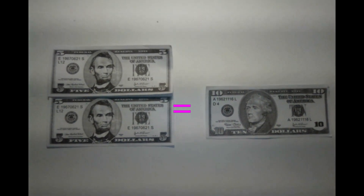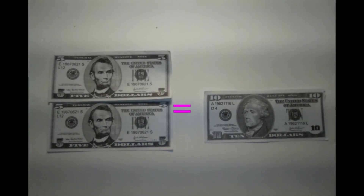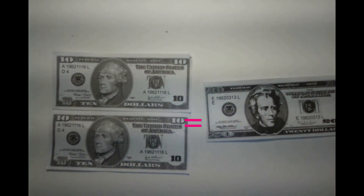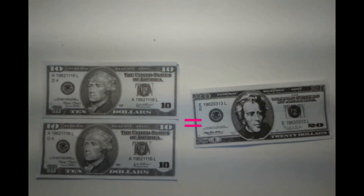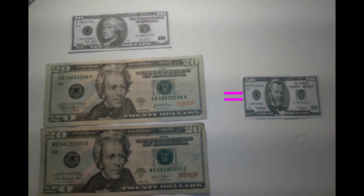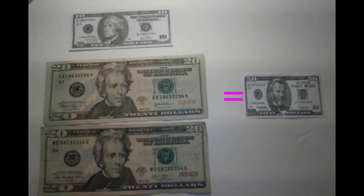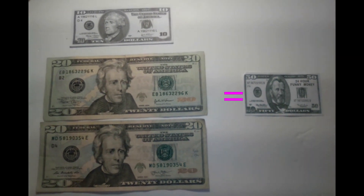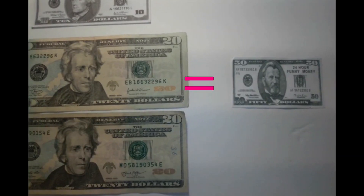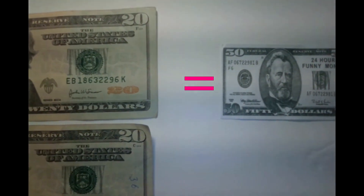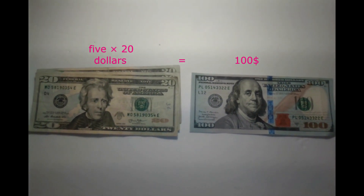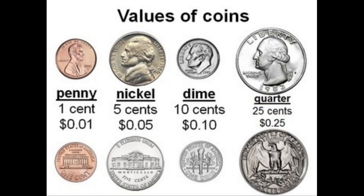Two five dollars equals ten dollars. And two ten dollars equal twenty dollars. Two twenty dollars and a ten dollar make fifty dollars. Five twenty dollars make one hundred dollars.